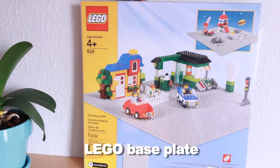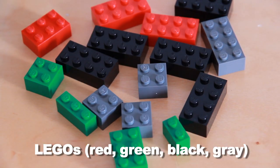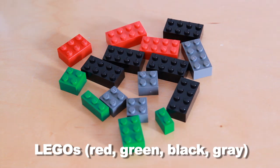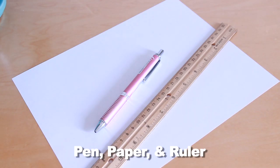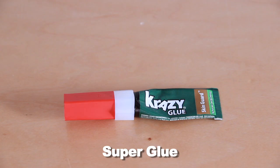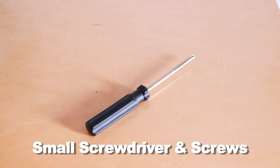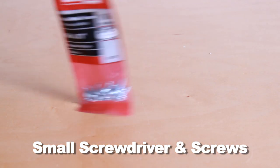A small clutch or handbag, a Lego base plate, Legos in red, green, black, and gray, scissors, a pen, paper, and ruler, superglue, a power drill, a small screwdriver, and small screws.